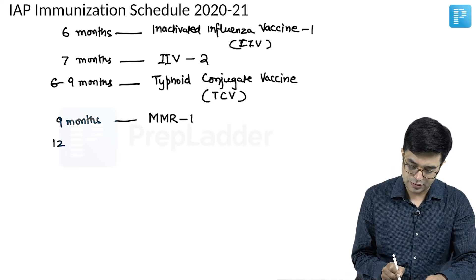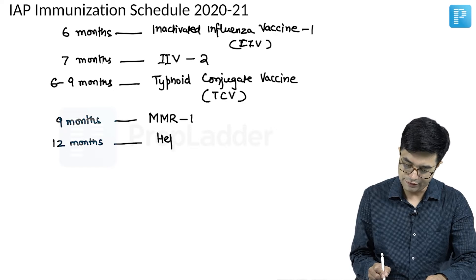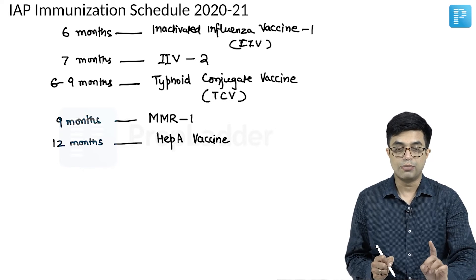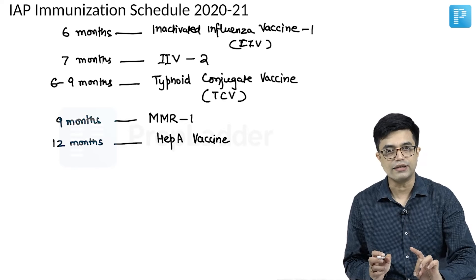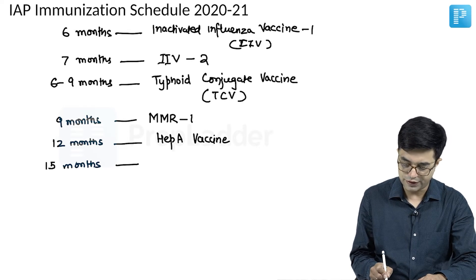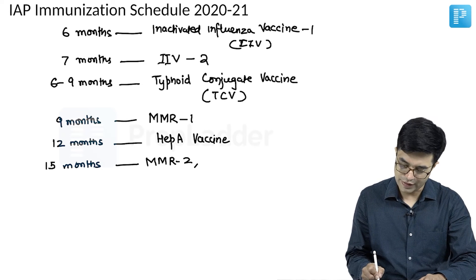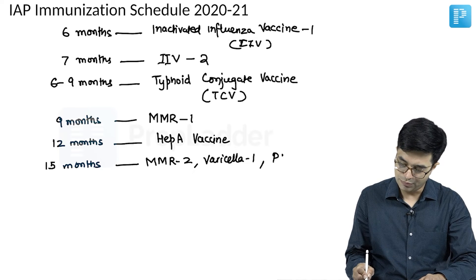At 12 months — 1 year of age — you give hepatitis A vaccine. Hepatitis A vaccine is not part of the national immunization schedule, but it is given in the IAP schedule to all children. At 15 months — 6 months after MMR-1 — you give MMR-2, the second dose of MMR. Additionally, varicella 1 (chickenpox vaccine) is given at 15 months, and the PCV booster is also given at 15 months.